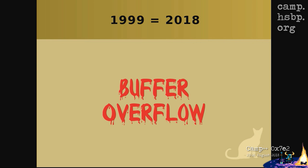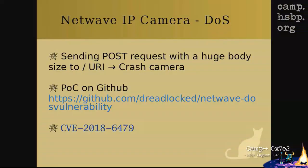Do you know a friend with an IP camera? There was a NetWave IP camera denial of service. You just use your browser's developer tools, send a POST request to the base address with a huge body, and it crashes the camera. There's a proof of concept on GitHub with a CVE, and it's easy to exploit — just send a POST request, make a loop in Python, and the camera is dead.